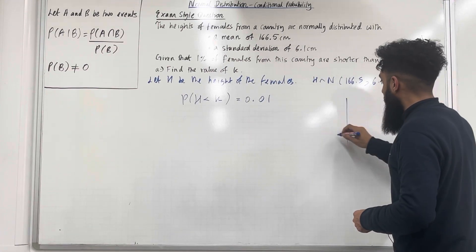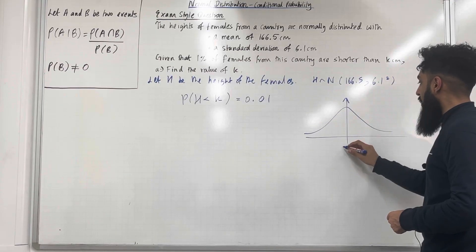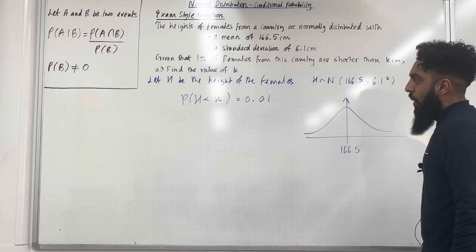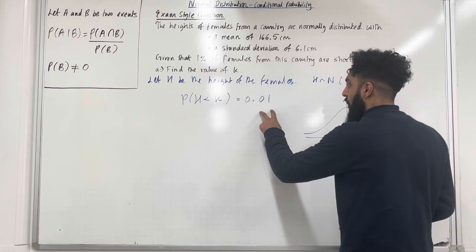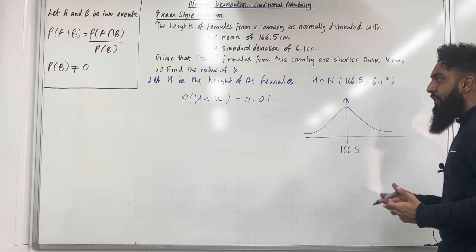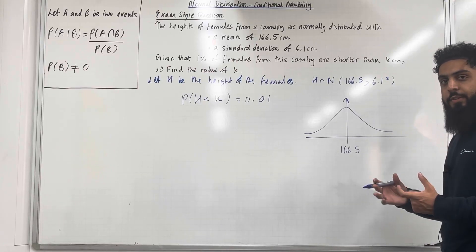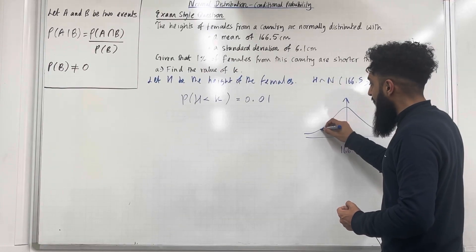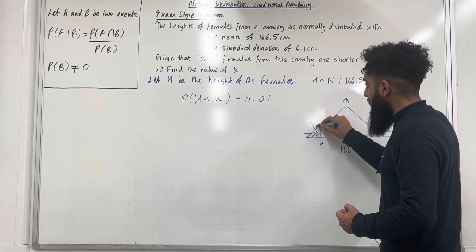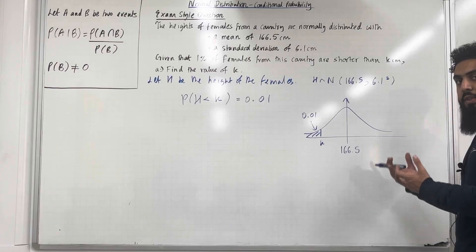Let's represent this probability under a bell-shaped curve. Here is my bell-shaped curve, centred at the mean of 166.5 cm. We want to shade in the area 0.01 to the left of K. So where do we position K so that the area to the left of K is 0.01, which is a very small area? We'll have to position K over here on the left. This area to the left is 0.01. We want to work out the value of K.